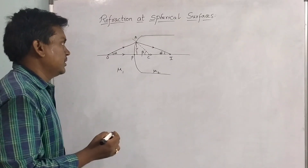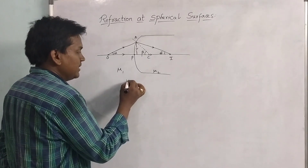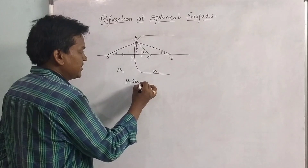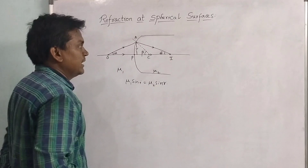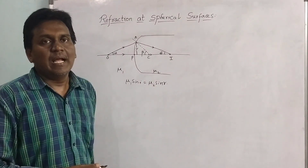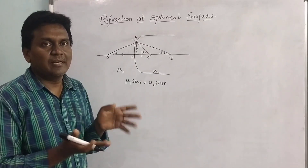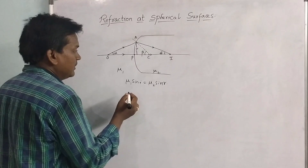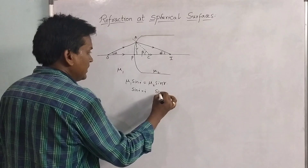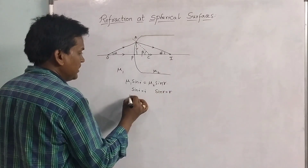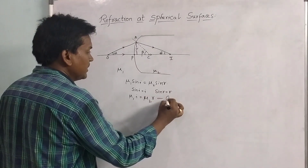Now we apply Snell's law: mu1 sin i = mu2 sin r. Since we are considering paraxial rays, the angles are very small. For small angles, sin i ≈ i and sin r ≈ r. Therefore, we can write mu1 × i = mu2 × r. Let this be equation 1.